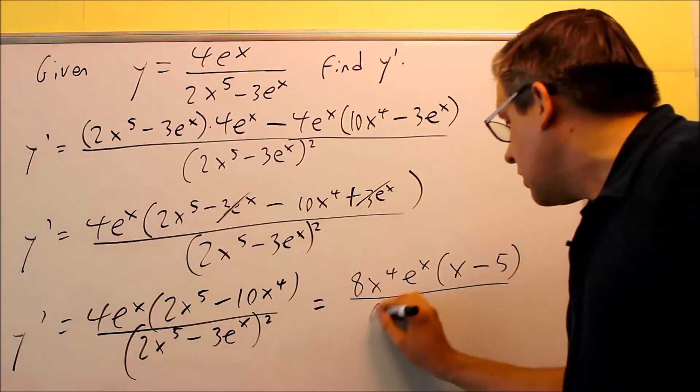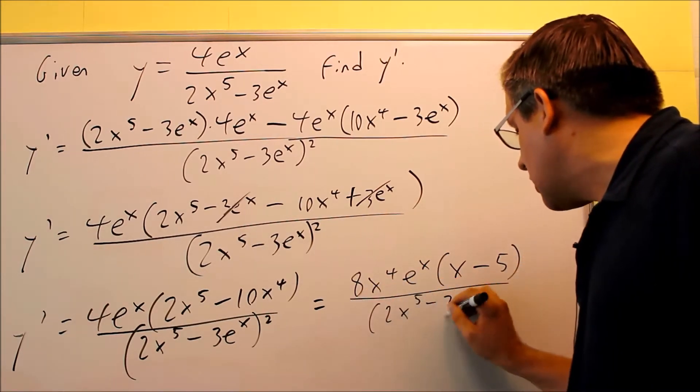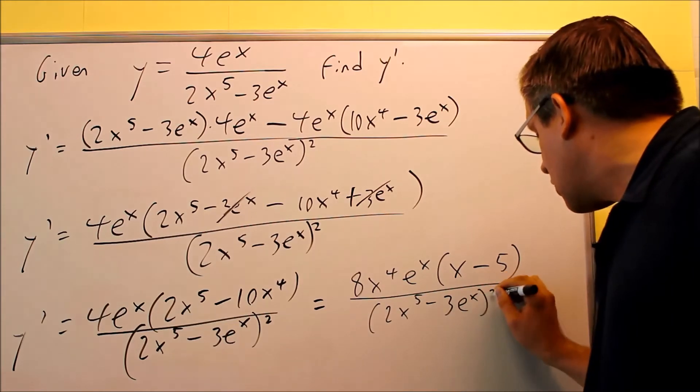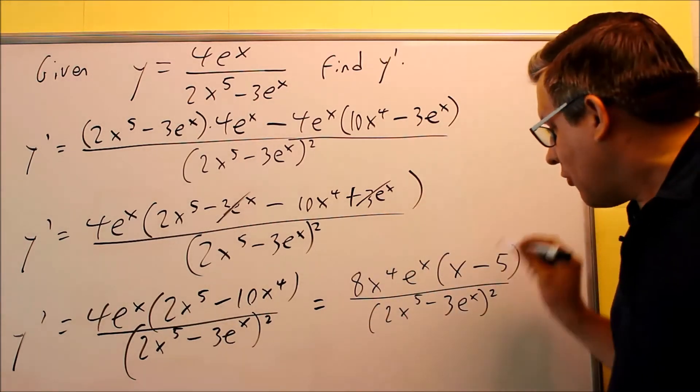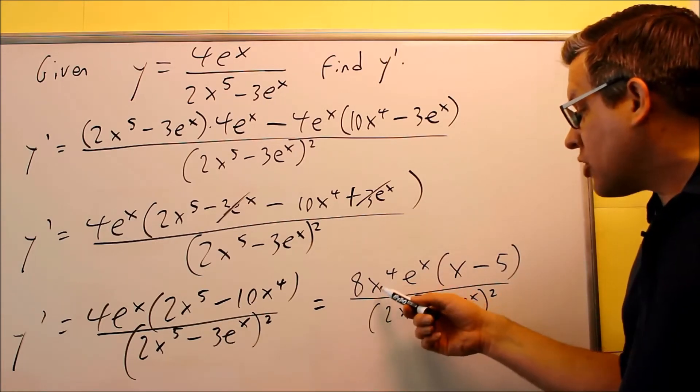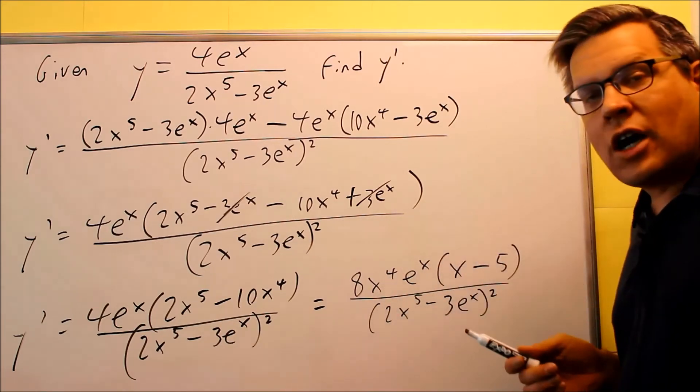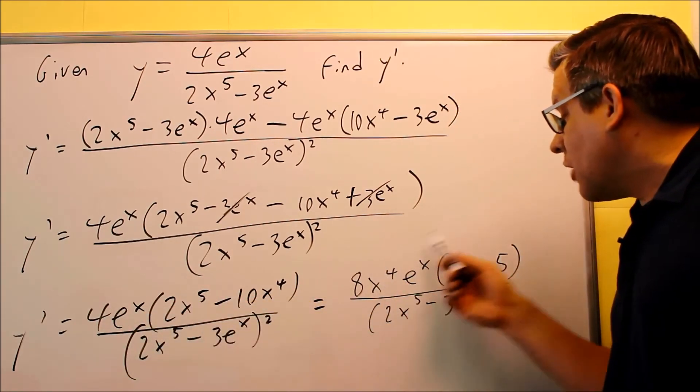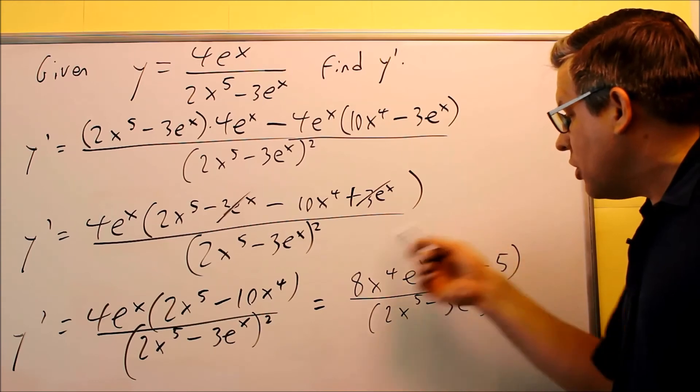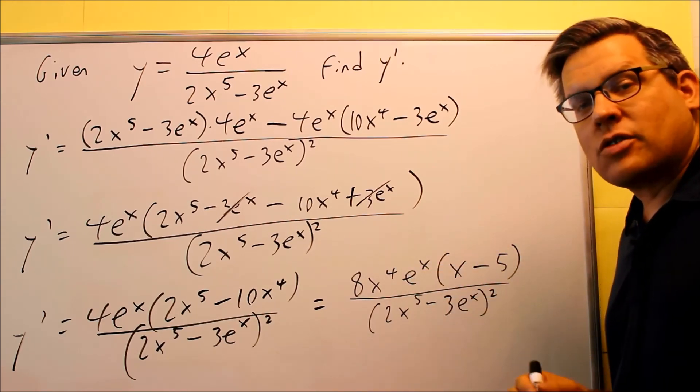And then the bottom, 2x to the 5th minus 3e to the x squared. This would be the most simplified factored answer. Again, you can always multiply it back through to see if you got the original thing. We could have multiplied it out here and it should be exactly the same thing if you multiply this out. So again, this would be your most simplified and factored answer.